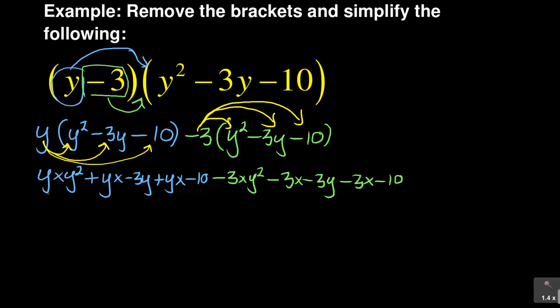When you multiply y times y squared, the powers add: 1 plus 2 gives three, so we get y cubed. Then y times minus 3y — a negative and a positive multiplying gives a negative — so that is minus 3y squared, because y times y is y squared and 1 times minus 3 is minus 3. And then y times minus 10 gives negative 10y.